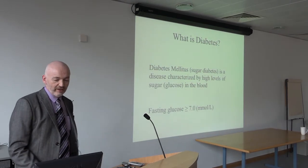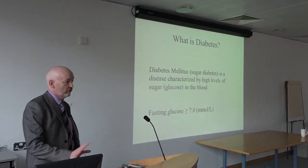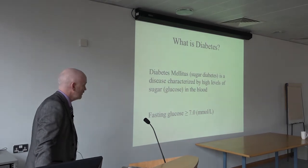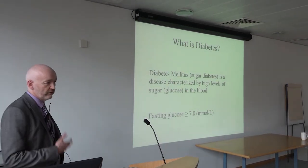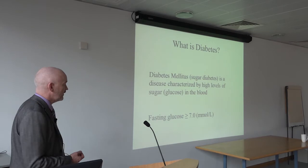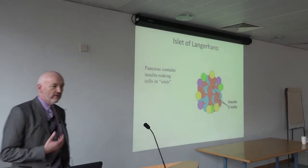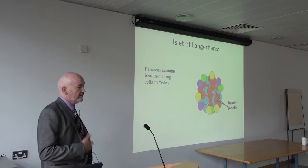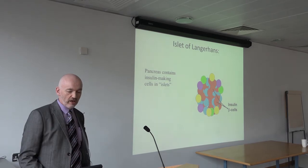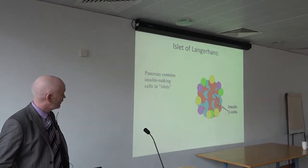So what is diabetes? Diabetes mellitus — sugar diabetes, as opposed to water diabetes, which has nothing to do with blood sugar — is a disease characterized by high levels of sugar or glucose in the blood. A normal fasting glucose, if you fast from midnight and go to your GP at 8 or 9 in the morning, should be less than 7. Anyone developing diabetes has inadequate insulin, the hormone from the pancreas that controls blood sugar.